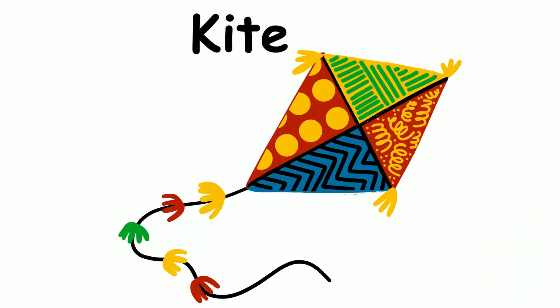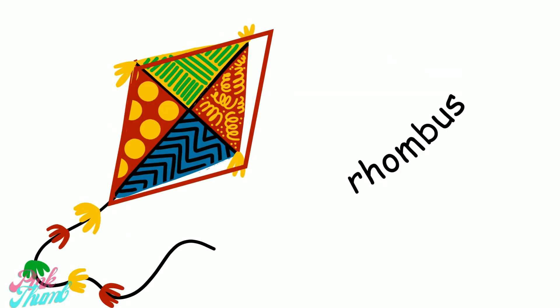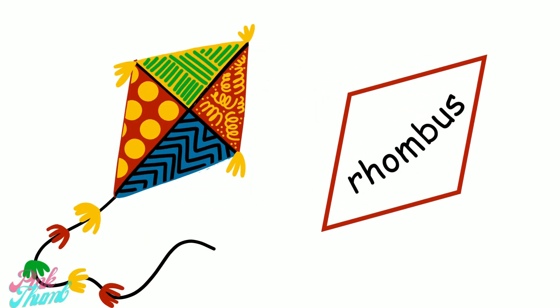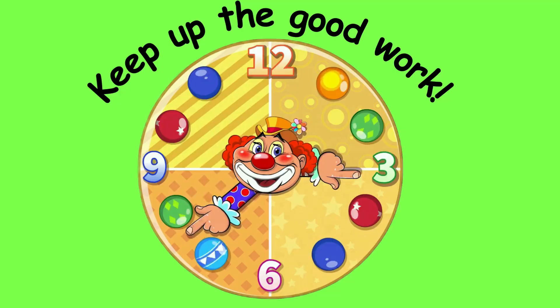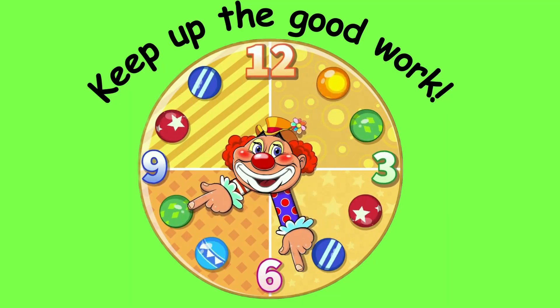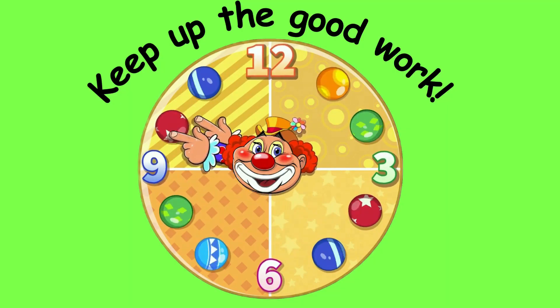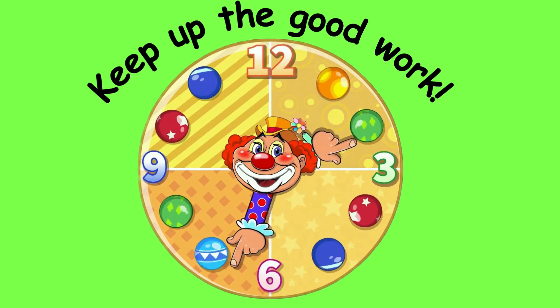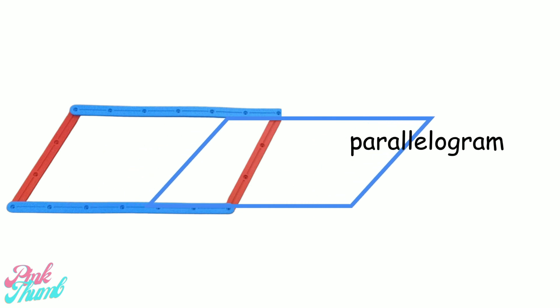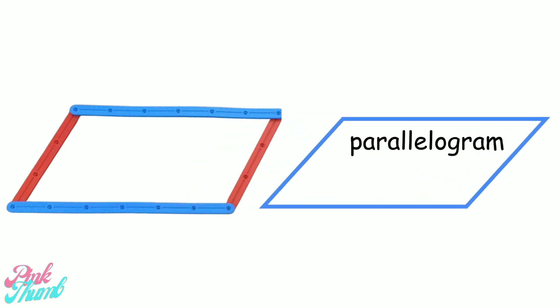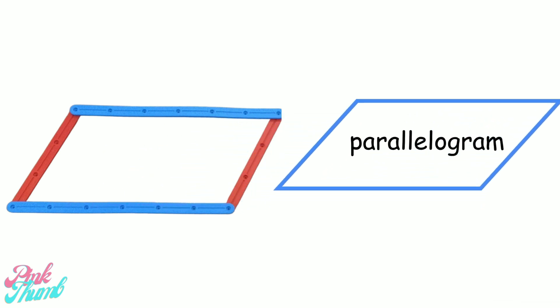What shape is this kite? A rhombus. Keep up the good work. What shape are these sticks? A parallelogram.